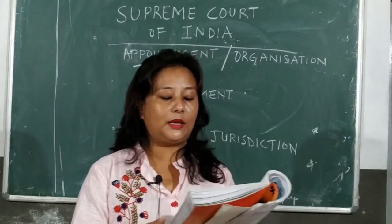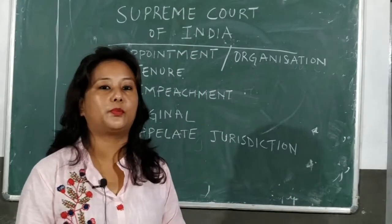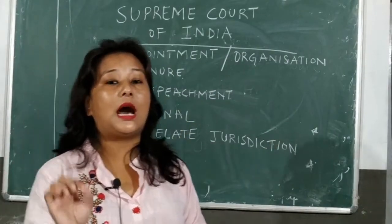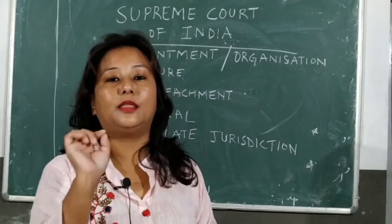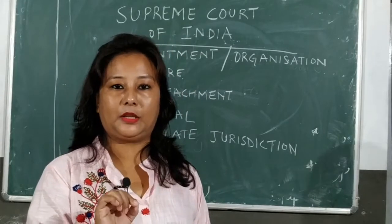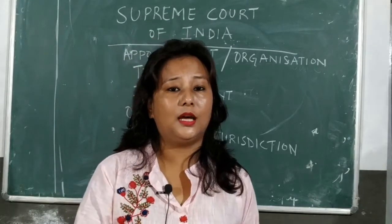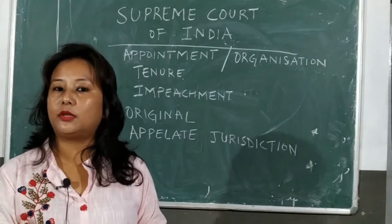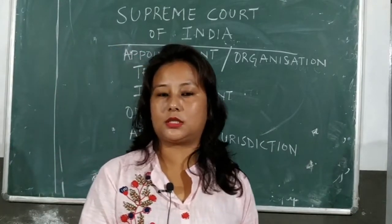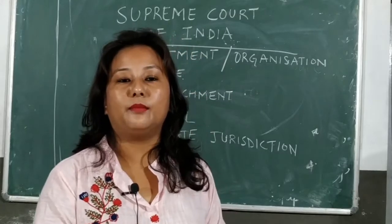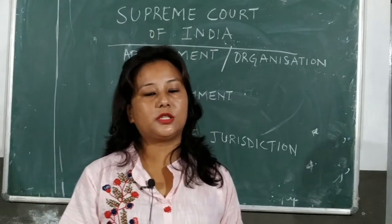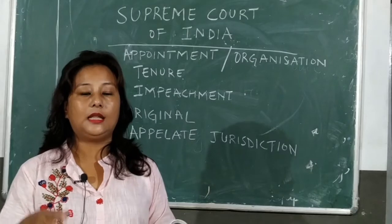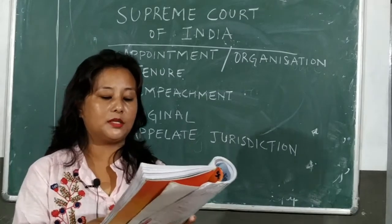Next I come to is organization of the Supreme Court. Organization means how many judges — the membership. So in India, we have a total membership of 30 judges, including one chief justice. So in India, the membership is 30 judges with one Chief Justice of India.